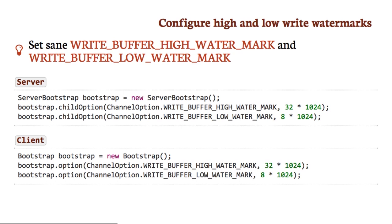This is how you set the watermarks. We have a write-buffer high watermark and a low watermark, settable per channel. For example, high-priority channels for high-paying customers can buffer more, while lower-priority channels get less. You can also adjust it on the fly — if you monitor your system's memory, you can hook in and adjust the watermarks dynamically. The default is 32 kilobytes for the low watermark and 64 kilobytes for the high watermark, but this may change in future releases, so just set it to a sane number.